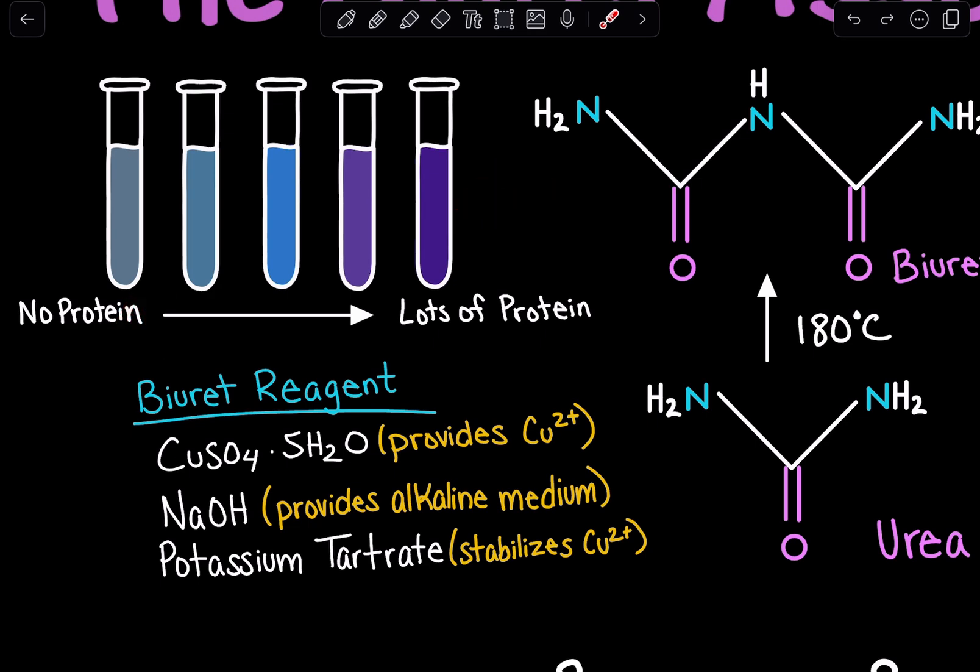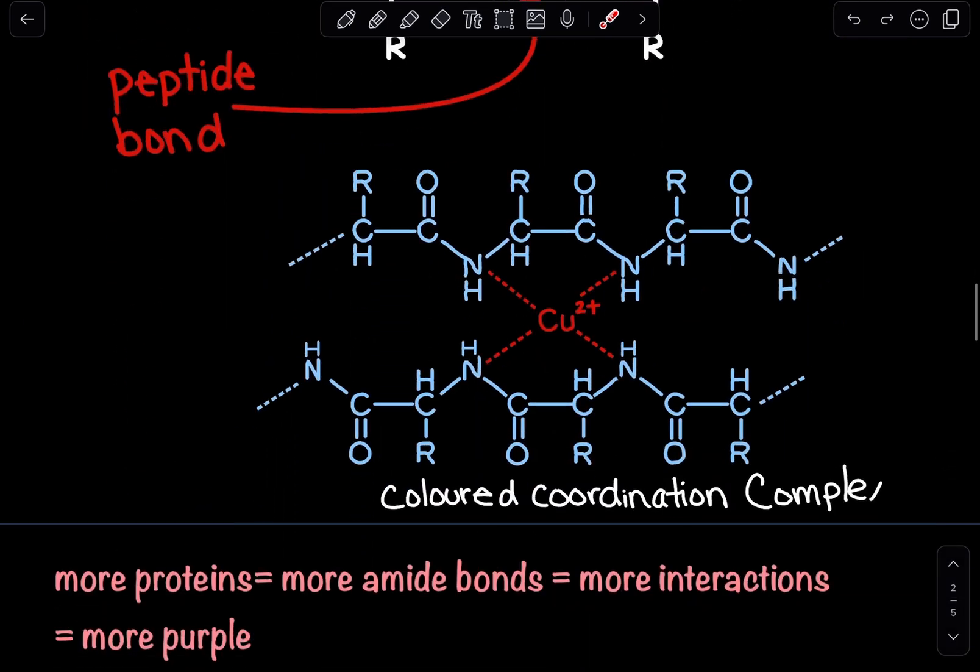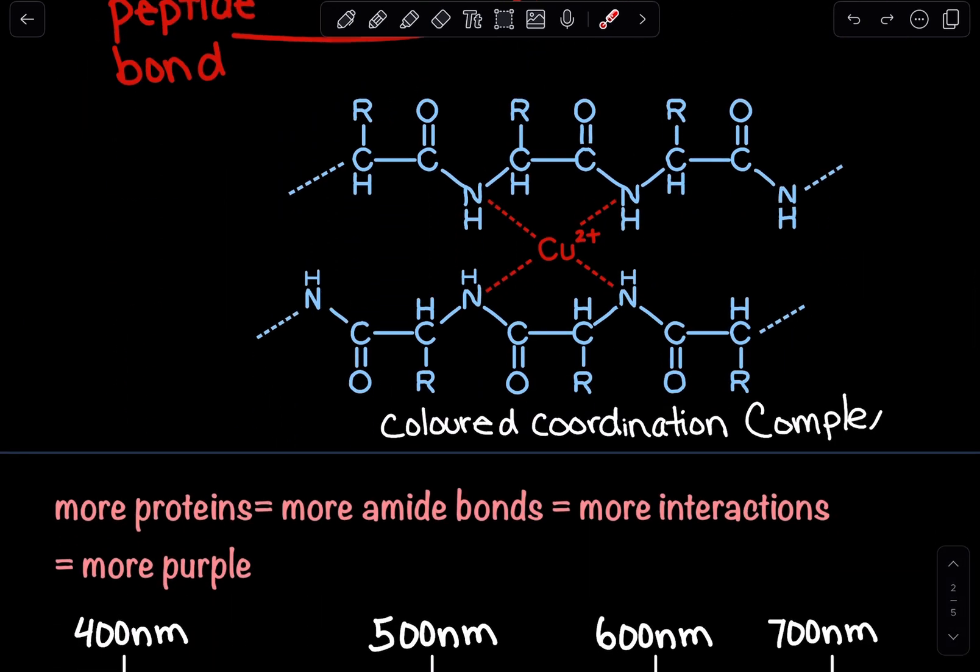A limitation to the Biuret assay is that this method doesn't work well with low protein concentrations, and that makes sense. If we have low protein concentrations, we're not going to have enough amide bonds. We're going to have limited interactions with our copper, and with limited interactions, we're only going to get a very faint bluish purple color, which is not going to give us accurate results.